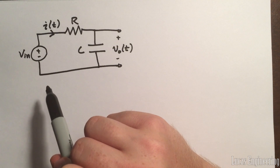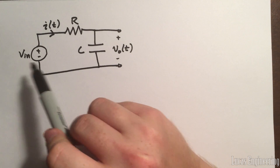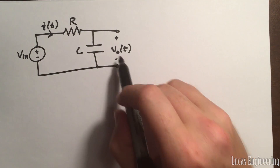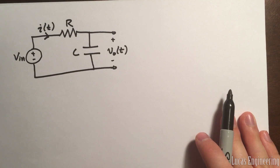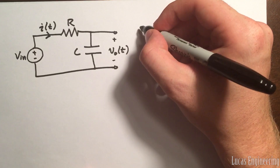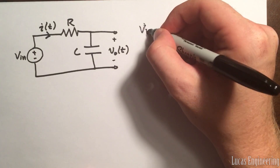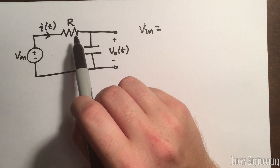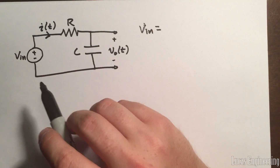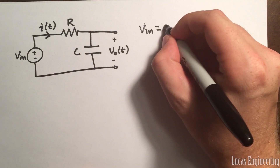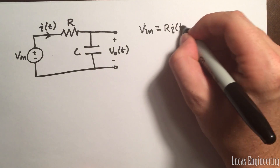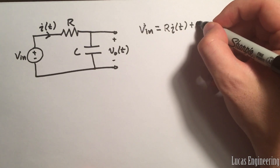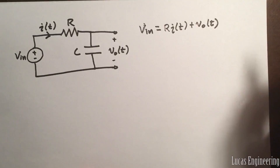To solve for V_out(T), we're going to use KVL — Kirchhoff's voltage law — which states that the source voltage V_n equals the voltage across the resistor plus the voltage across the capacitor. The voltage across the capacitor is V_out. Using Ohm's law, the voltage across the resistor is R times I(T), so: V_n = R·I(T) + V_out(T).